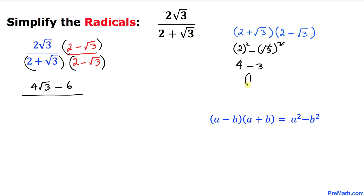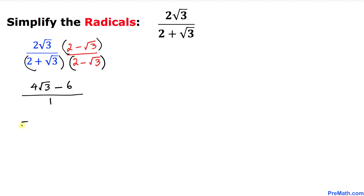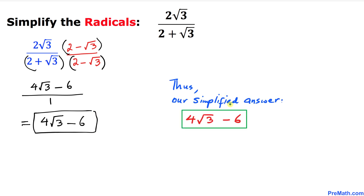4 minus 3 is simply 1, so our denominator simplifies to 1. Therefore our simplified answer is 4 times square root of 3 minus 6. Thanks for watching, and please don't forget to subscribe to my channel for more exciting videos.